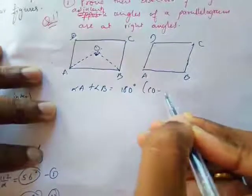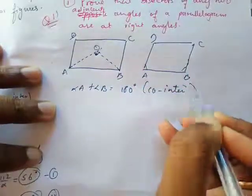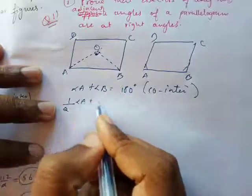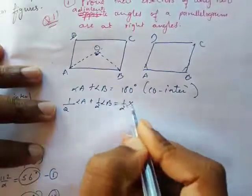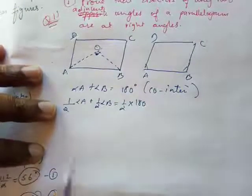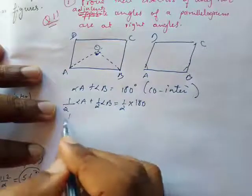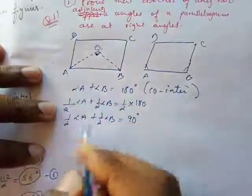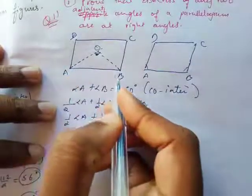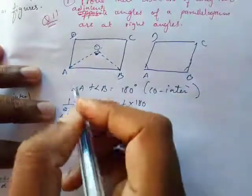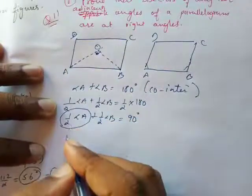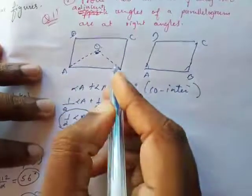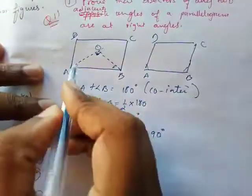We know angle A + angle B = 180° because they are co-interior angles in a parallelogram. Multiplying the whole equation by half: (1/2)angle A + (1/2)angle B = 90°. So half of angle A written as angle BAO, plus half of angle B written as angle ABO, equals 90°.